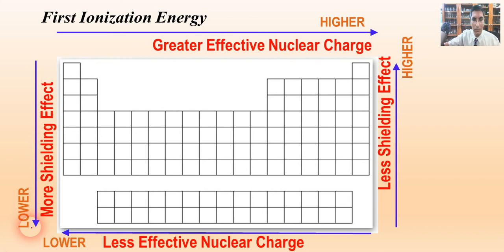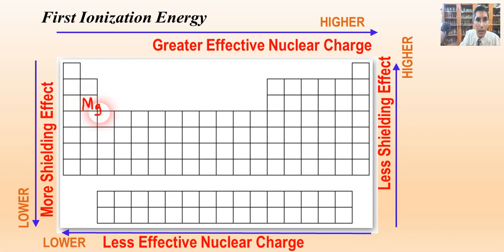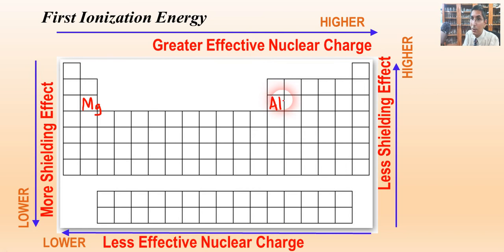These are trends, which means there are some exceptions. There are no hard and fast rules — we do find some anomalies that we can explain. For example, looking at aluminum and magnesium: based on the trend, you'd expect aluminum to have a higher first ionization energy than magnesium due to effective nuclear charge. But in the literature, aluminum actually has a lower first ionization energy than magnesium — it doesn't follow the trend. Why is that?